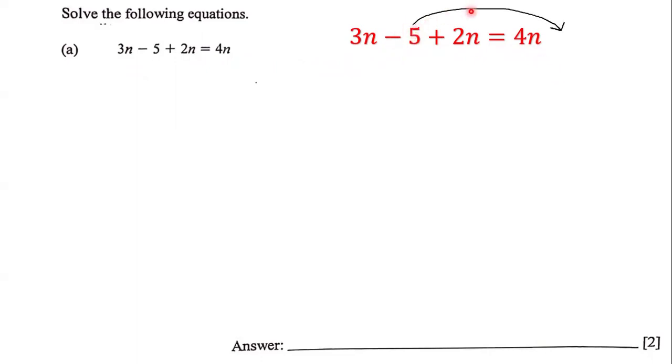...send the negative 5 over the equal sign. This is a negative 5, but when we send it over the equal sign it becomes a positive 5. So we have 3n plus 2n equals 4n plus 5.